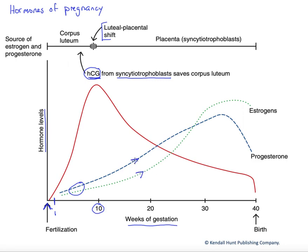Progesterone is anti-contractile of the myometrium layer. It helps to avoid menses early, but later on it's just helping to maintain a relaxed uterus. The estrogens, on the other hand, stimulate placental blood flow, which is very important to a growing fetus. They also stimulate growth of that smooth muscle layer of the myometrium, making the uterus wall stronger and stronger over time. Those hormone levels are maintained until fairly late in pregnancy.